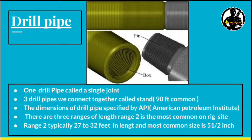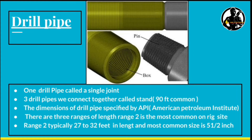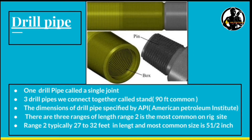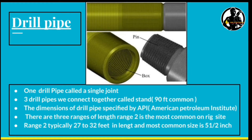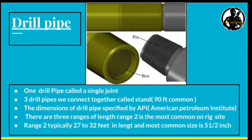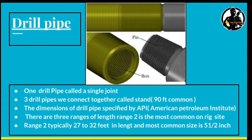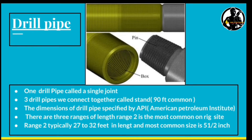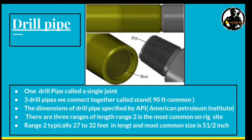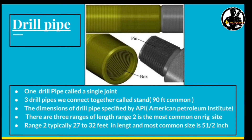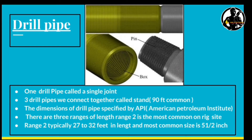When three drill pipes are connected together, it is called a stand. The common size of a stand is 90 feet. Dimensions are specified by API — the American Petroleum Institute. There are three ranges of length; range 2 is the most common on the rig site, mostly 27 to 32 feet.